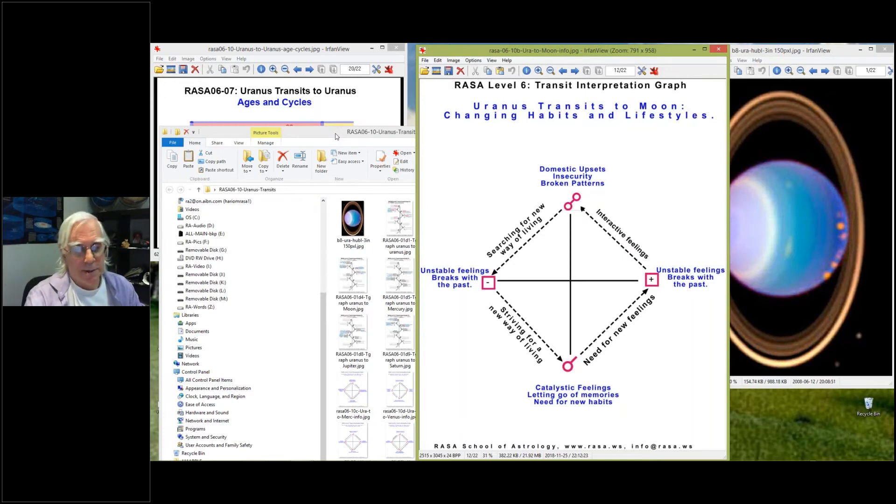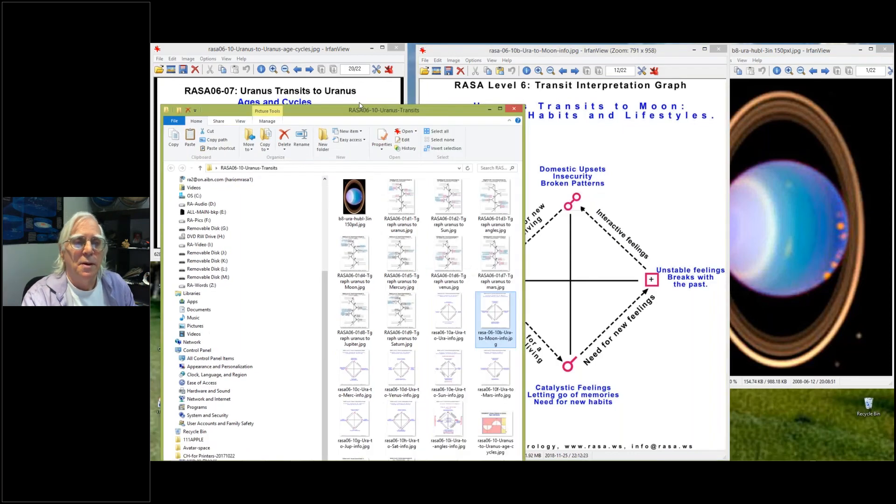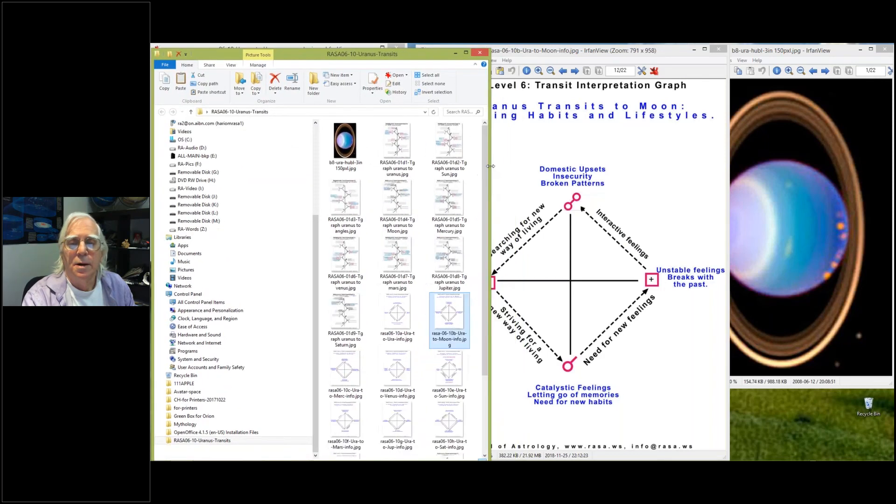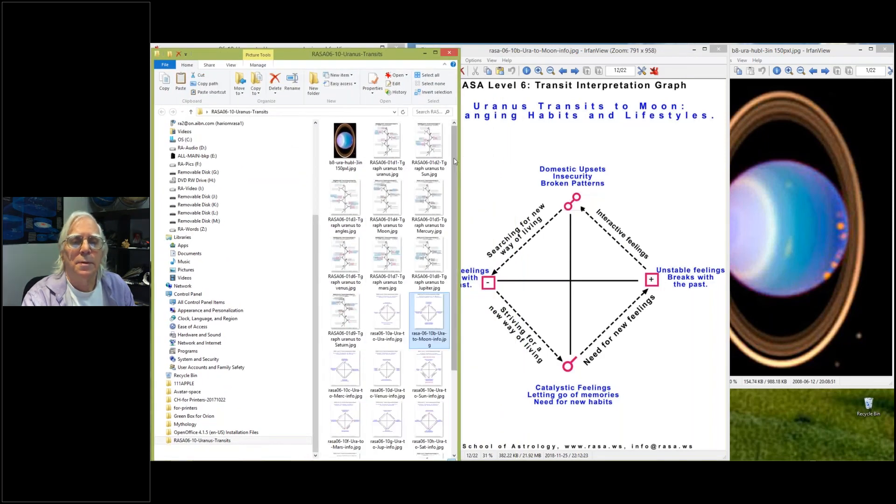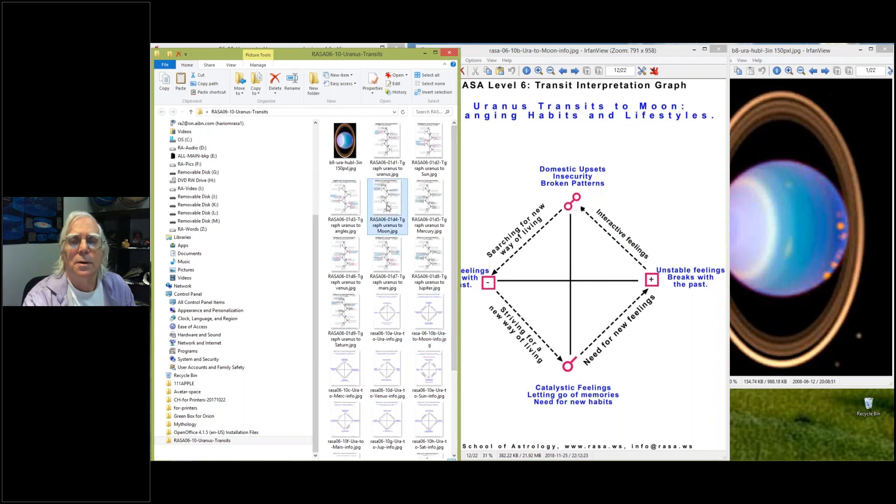If you do all your Uranus to your angles, you see the big things happen just before each one. That shocking thing is going to be there down to the month - you'll see it within a month for sure. When we get to the moon, it's your lifestyle, it's your habits.